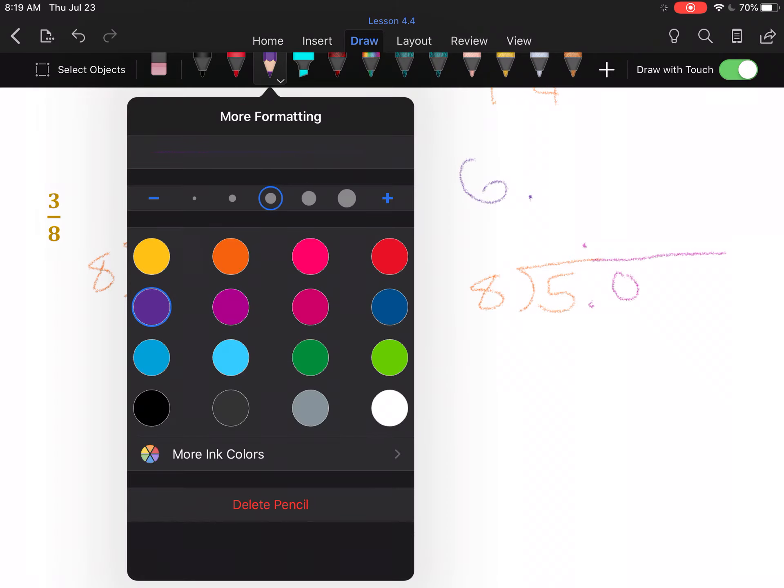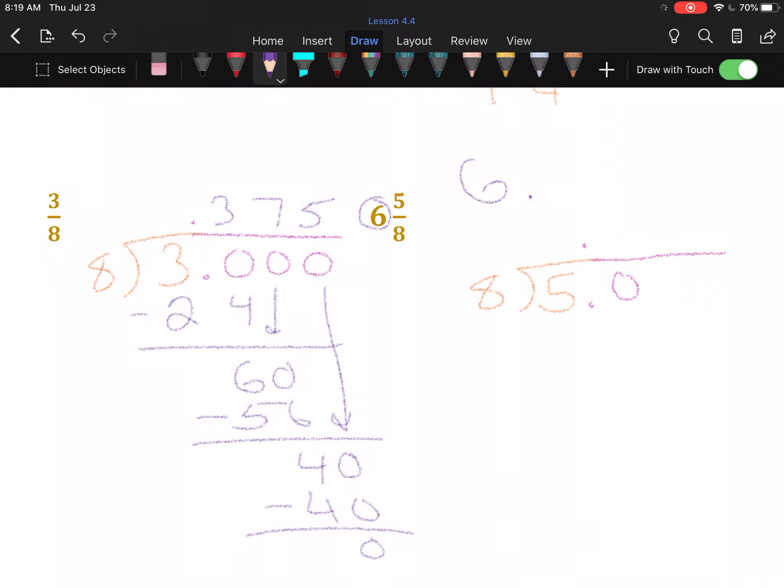Eight goes into fifty six times. Six times eight is forty-eight. When I subtract that, I have two. Add another zero and drop it. I have to keep going until I either get no remainder or the remainder starts repeating.